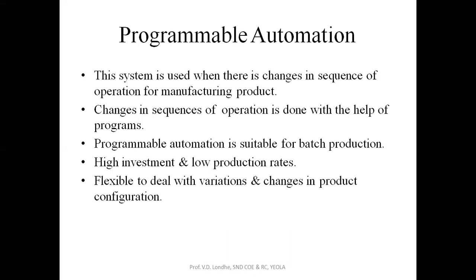The second type is programmable automation. The name itself indicates that this system uses different programs to set the process line. It is used where a change in the sequence of operations is required for manufacturing. In this system, we are able to add other operations or combine two products on the same line with the help of programs. Changes in the sequence of operations can be done with programmable language — we can modify the process line or add other products to it.